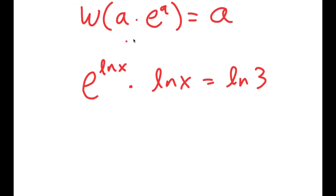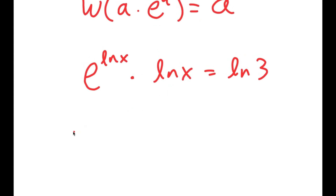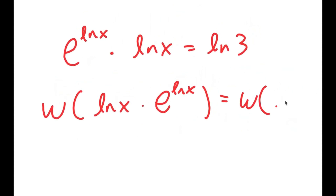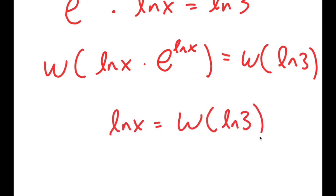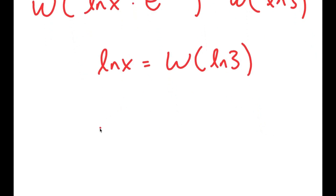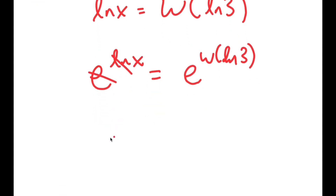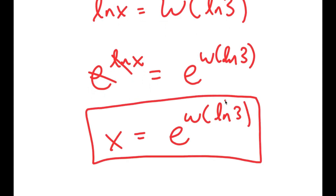Notice this is now in the form a times e to the power of a, where a is ln x. So it's ln x times e to the power of ln x equals ln 3. Taking the Lambert W function on both sides: W of ln x times e to the power of ln x equals W of ln 3, which gives ln x equals W of ln 3. Taking e to the power of both sides, the ln cancels, giving x equals e to the power of W of ln 3.